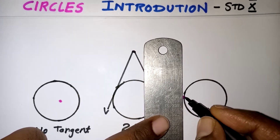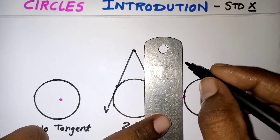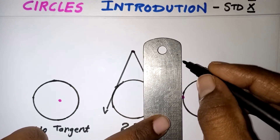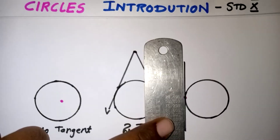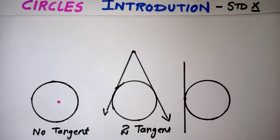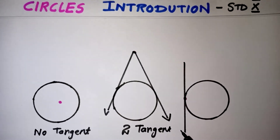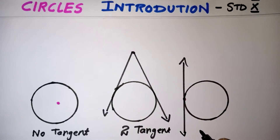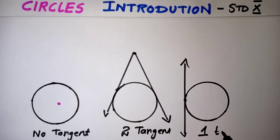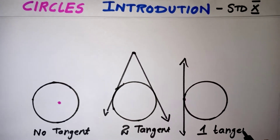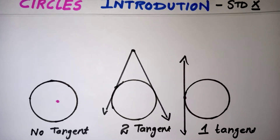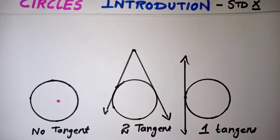Through a point on the circle, we can draw only one tangent. So when the point is on the circle, only one tangent is possible.